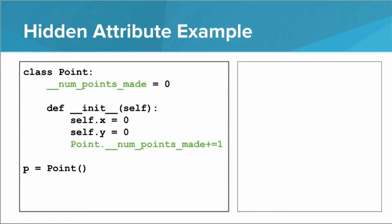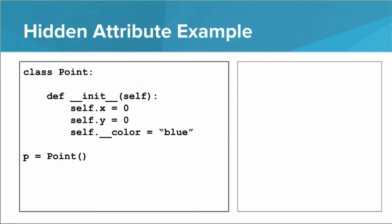All we have to do to make an attribute hidden is put two underscores in front of it. Now the only code that can access numPointsMade is the code within the class. If we tried to do something like Point.numPointsMade equals 20, Python would throw an error. Similarly, we can put hidden attributes at the object level — every single point instance gets its own color, and we want color to be hidden, so we put two underscores in front of color. Now every color starts off blue, and if we tried to say p.color equals red, Python would throw an error.